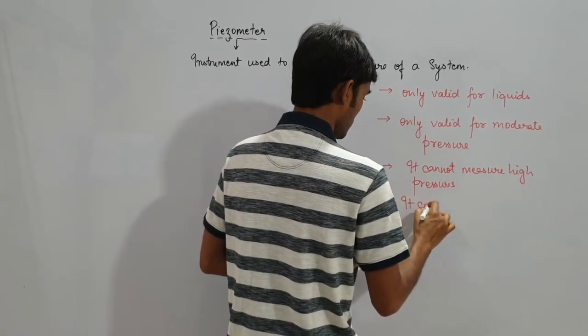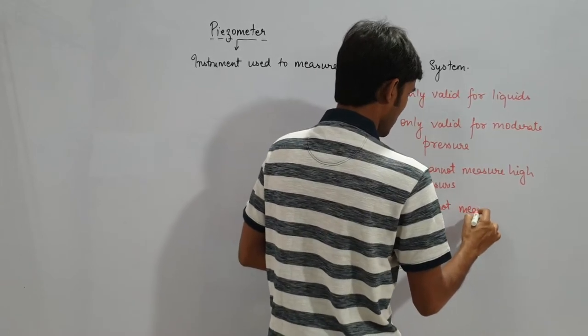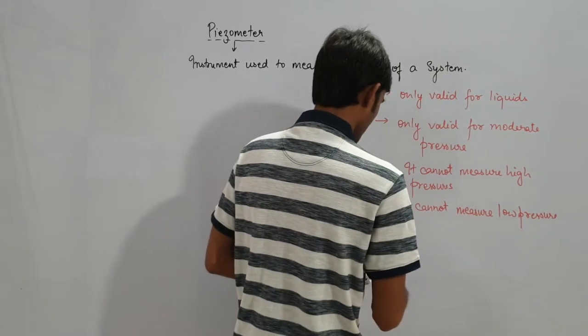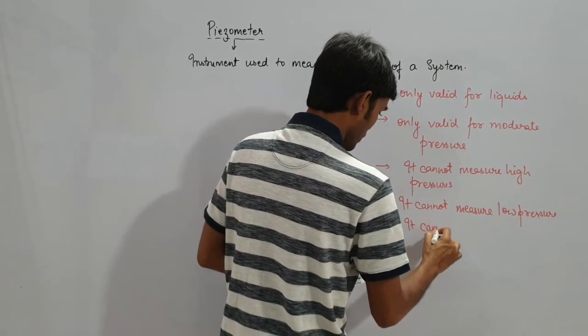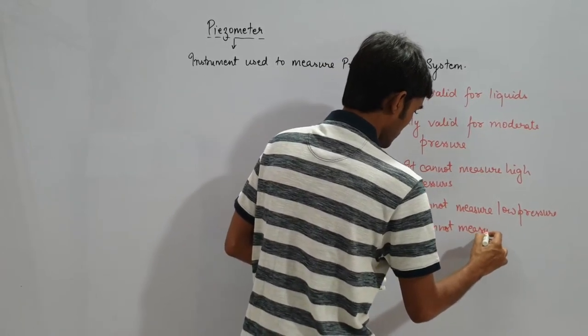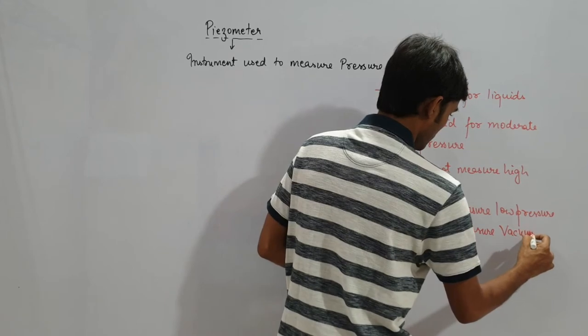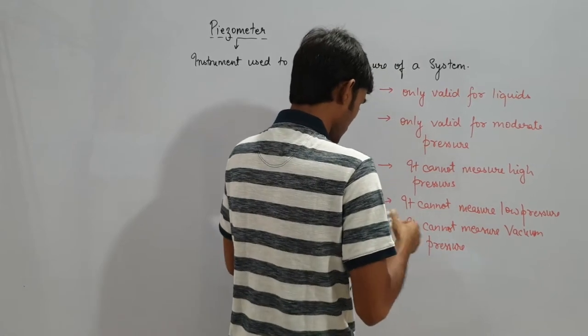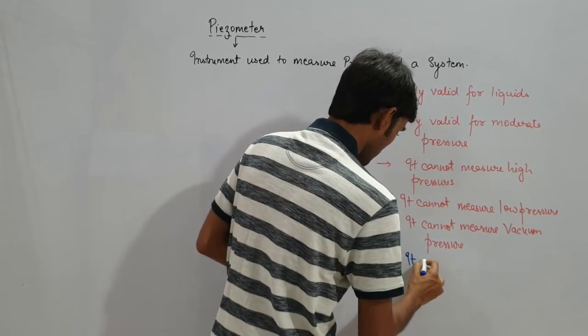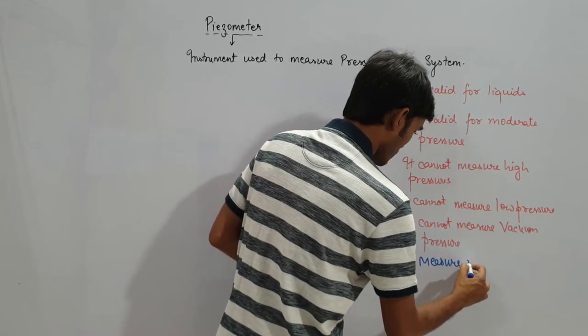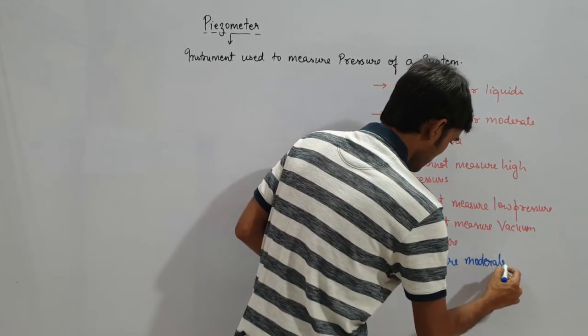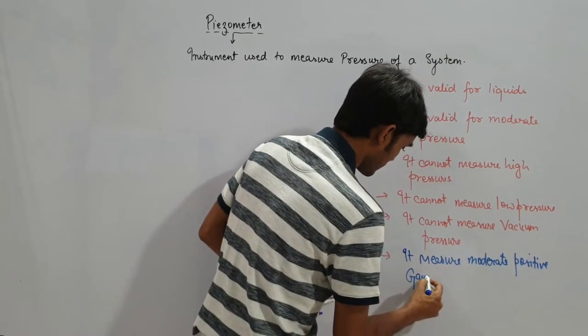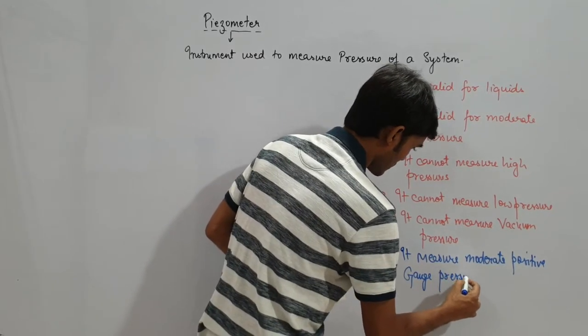It cannot measure low pressures. Rather, you can say it cannot measure vacuum pressure. It measures gauge pressure.